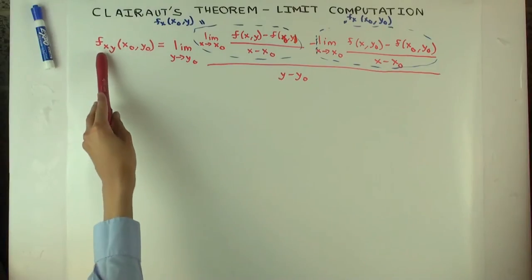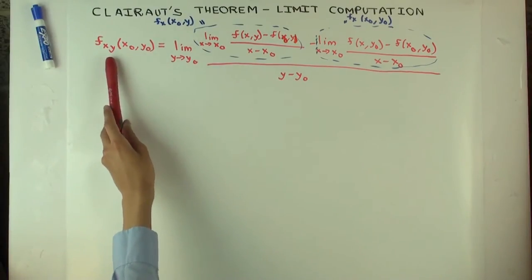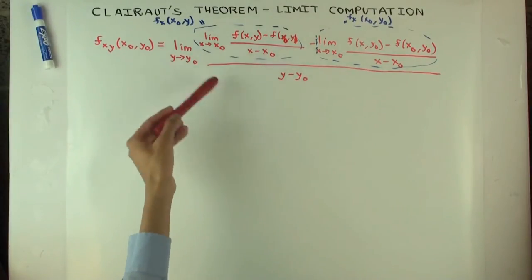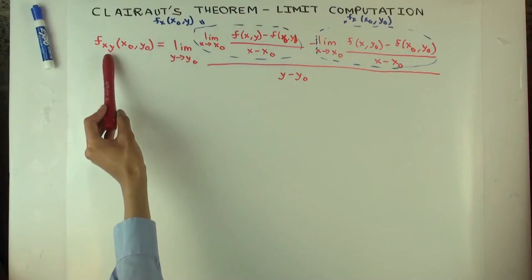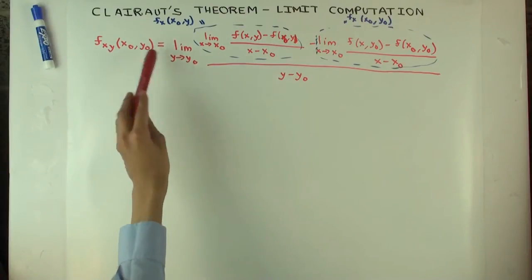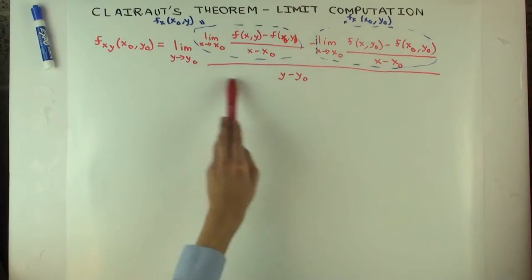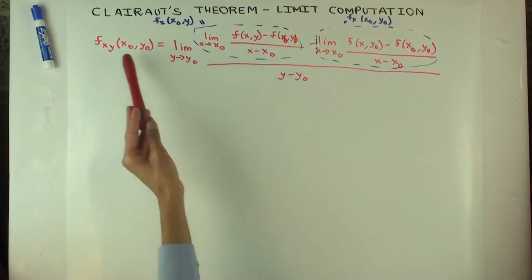And the way I'm going to do that is I'm going to try to compute f sub xy as a double limit, and then I'm going to compute f sub yx as a double limit, and I'll show they are essentially the same. So what's f sub xy of x naught, y naught? Well there's a separate video where I compute this, where I obtain this formula. But for now, I'll just quickly explain how I got this.